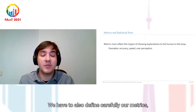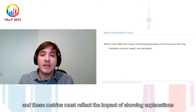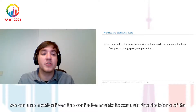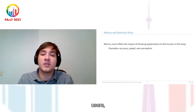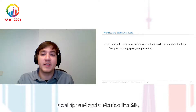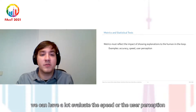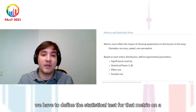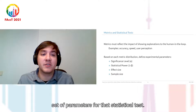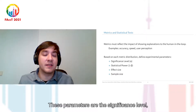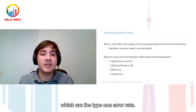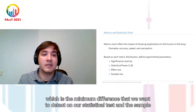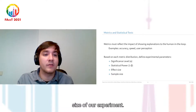We also have to carefully define our metrics, and these must reflect the impact of showing explanations on the user. For example, we can use metrics from the confusion matrix to evaluate the decisions of the user, such as accuracy, recall, and FPR, and we can also evaluate speed or user perception. Based on the distribution of each metric, we define the statistical test and its parameters: the significance level (type one error rate), the power (one minus the type two error rate), the effect size (the minimum difference we want to detect), and the sample size.